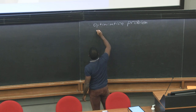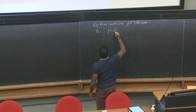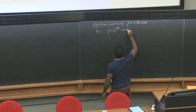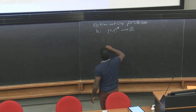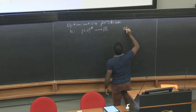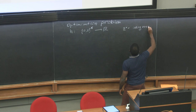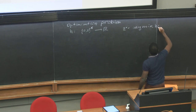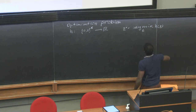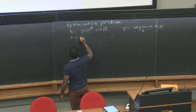The problem is: given a certain function h, which maps a set of classical bits to ℝ, it's about finding the minimum — zeta star — which is going to be the argmin of h(zeta) over all bit strings. Here, zeta is a collection of n binary variables that can assume value 0 or 1.